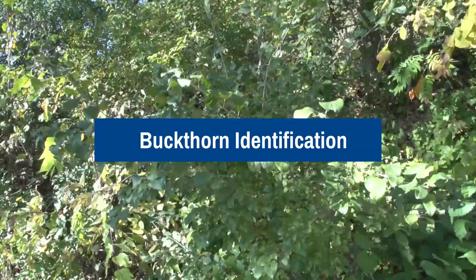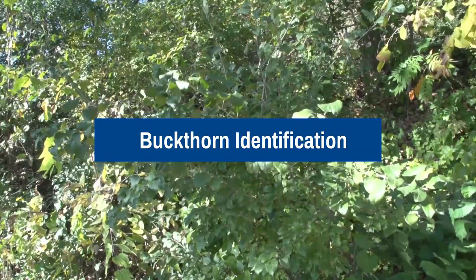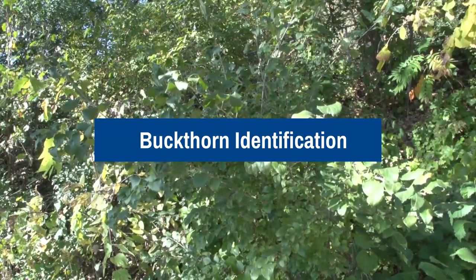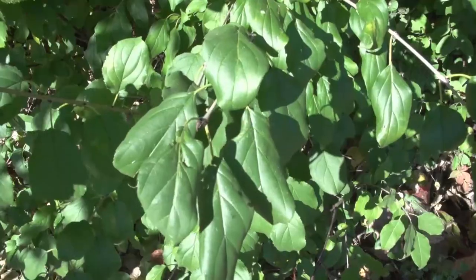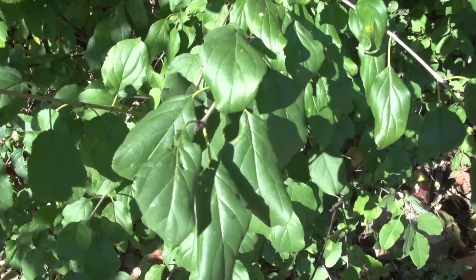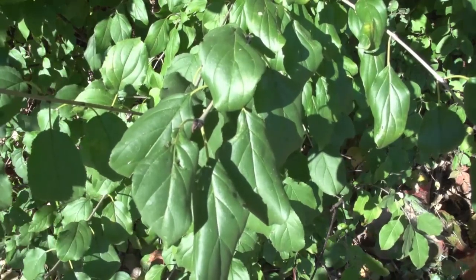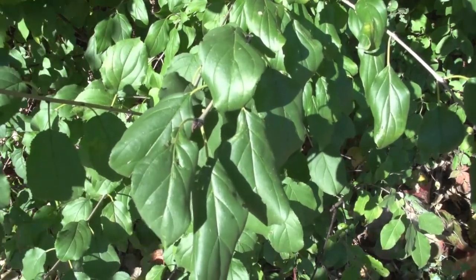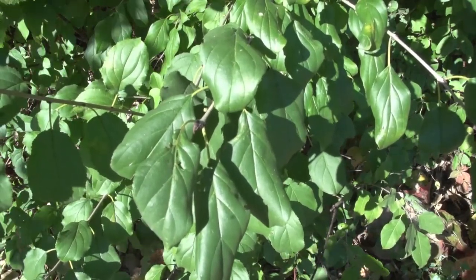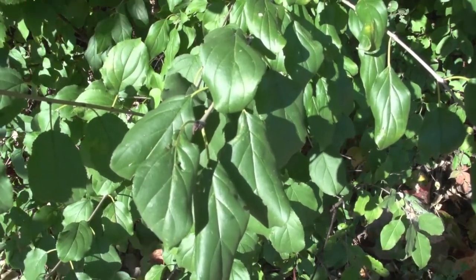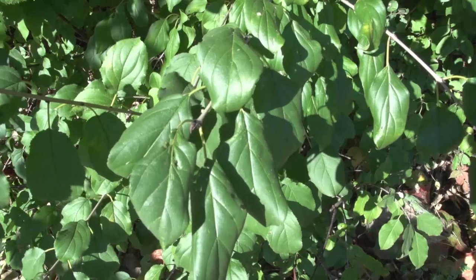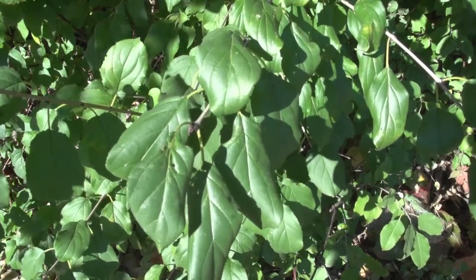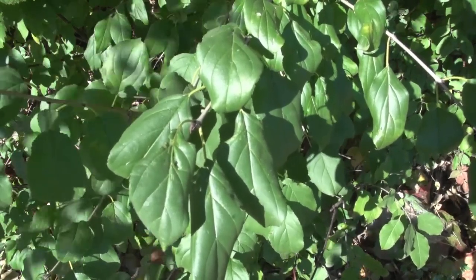How do you know if you have buckthorn on your property? Common buckthorn leaves are egg-shaped, hairless, elliptical leaves that are pointed at the tip and have smooth, dark, glossy, and fine-toothed edges. Common buckthorn remains green well into late fall.